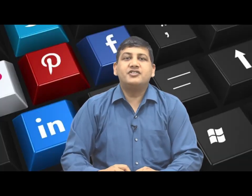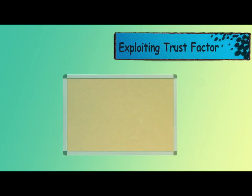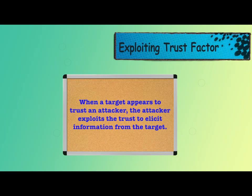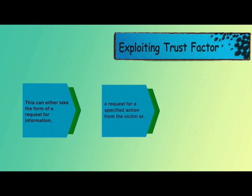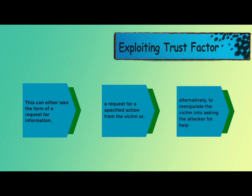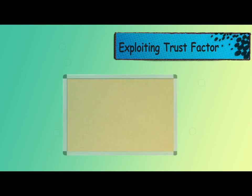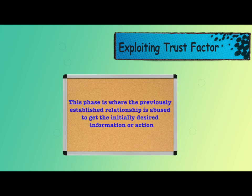The third step of the social engineering attack cycle is exploiting trust. When a target appears to trust an attacker, the attacker exploits that trust to elicit information. This can take the form of a request for information, a request for a specified action from the victim, or alternatively, manipulating the victim into asking the attacker for help. This phase is where the previously established relationship is abused to obtain the initially desired information or action.